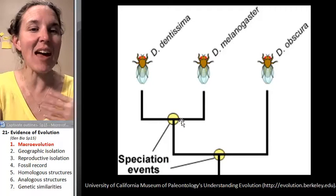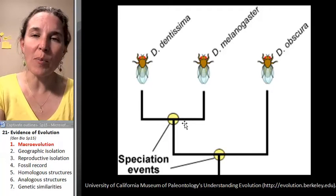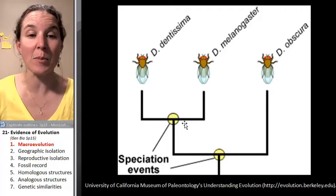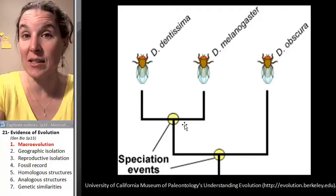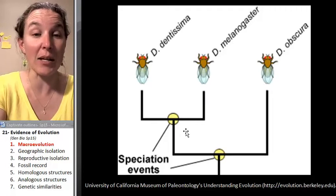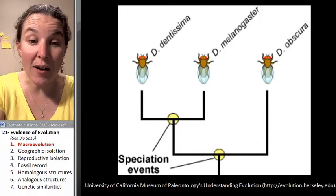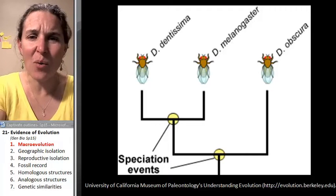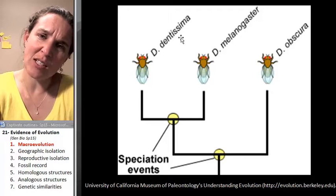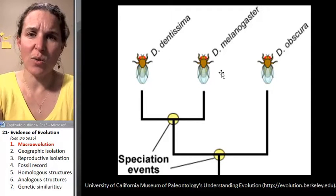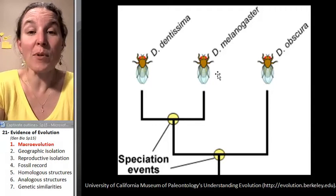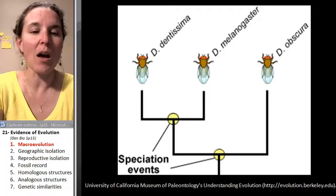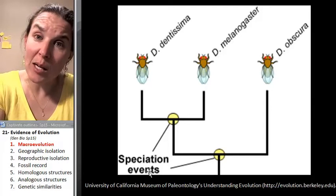That's macroevolution, and that's what we're going to talk about. So we've got a couple of pieces where we're going to look at the mechanism of speciation, and then we're going to start looking at the evidence that speciation has taken place in the past. So the first thing we have to talk about is what starts speciation? Why did Drosophila dentissima — what happened to branch dentissima off from melanogaster? Why did that happen? Why did this speciation event take place?